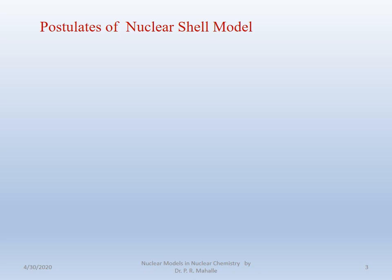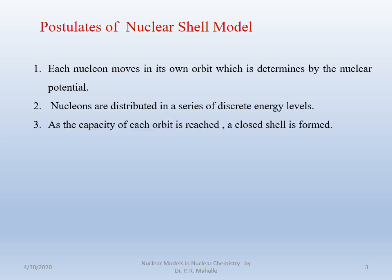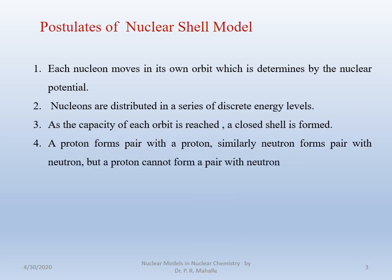We will see the postulates of the nuclear shell model. The shell model of the nucleus was derived from the very successful electronic shell atom. It involves the nucleons which move in their own orbits, determined by the nuclear potential. These nucleons are distributed in a series of discrete energy levels. The capacity of each orbital is fixed, and a closed shell is formed when filled. The proton forms a pair with the proton, and similarly the neutron forms a pair with the neutron. But a proton cannot form a pair with the neutron.